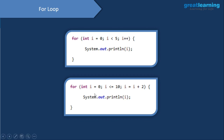Another for loop example: initialize i = 0, condition i <= 10, increment i by 2 each iteration. This prints 0, 2, 4, 6, 8, 10. In Eclipse: 'for (int i = 5; i <= 20; i = i + 5)' — this starts at 5 and increments by 5. So we print 5, 10, 15, 20. When i becomes 25, 25 <= 20 is false and we exit the loop.